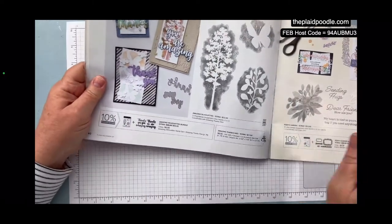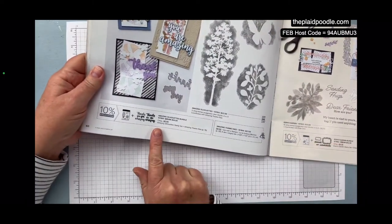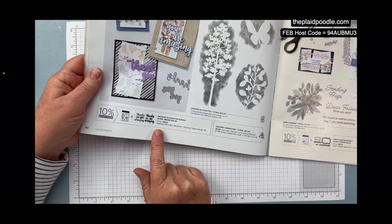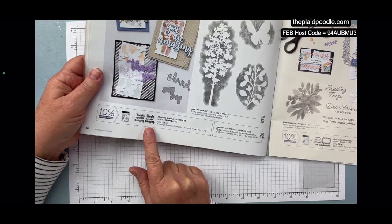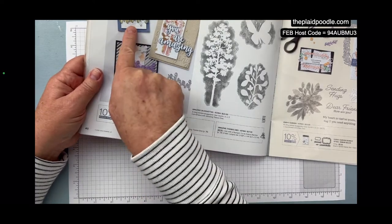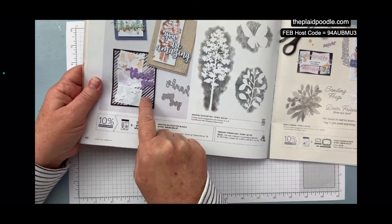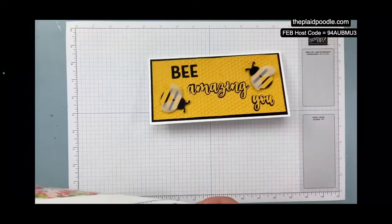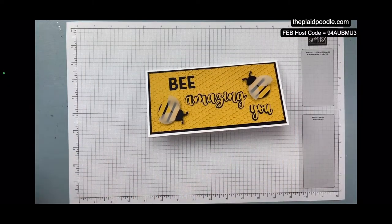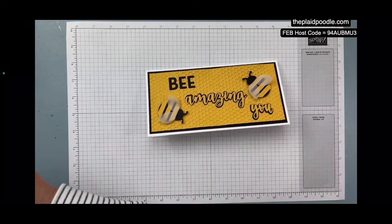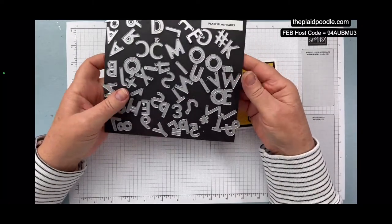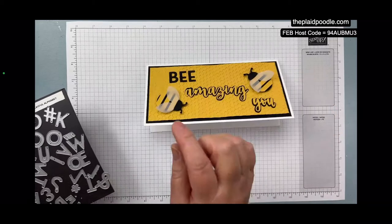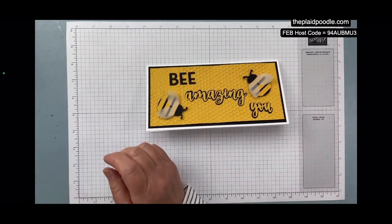I started on page 40 of the spring mini. There are the Amazing Thanks dies, so you've got 'thanks,' 'you are an amazing,' 'thank you.' And we are using it together with our Playful Alphabet dies to say 'bee amazing you.' And then I've put these little bees on here and I'm going to show you how to do that.